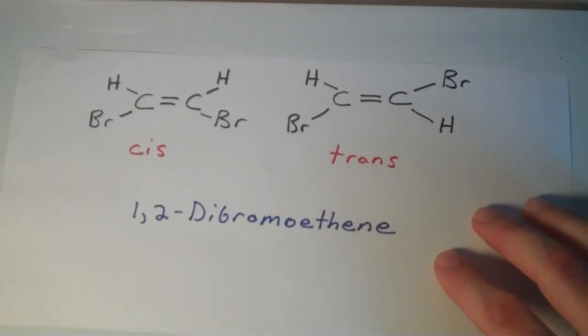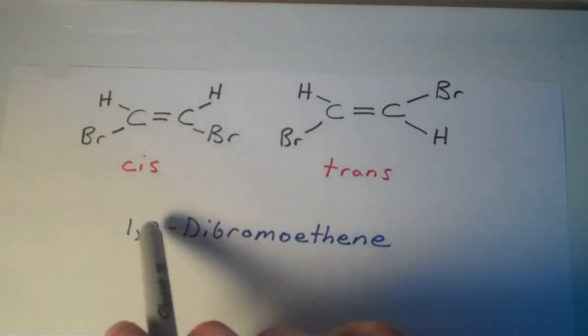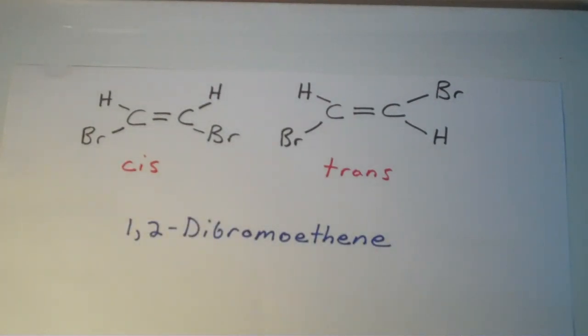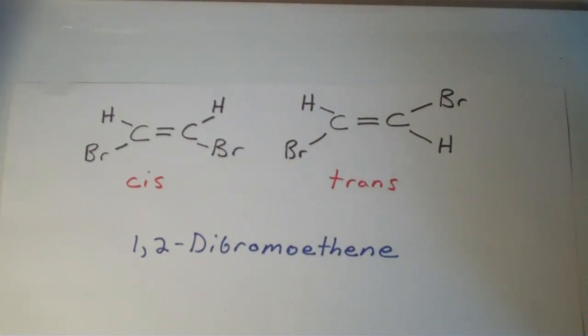So if you consider a molecule such as this one, this is what we call 1,2-dibromoethene. 1,2-dibromoethene is just two carbons that are doubly bonded to one another. And each of those two carbons has a hydrogen and a bromine atom attached to it. And because the rotation is restricted around the pi bond...